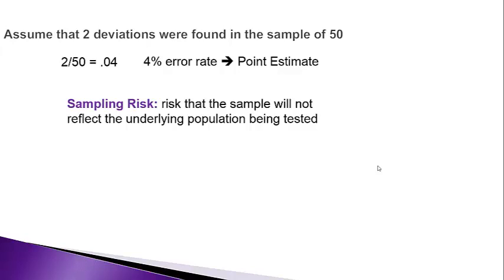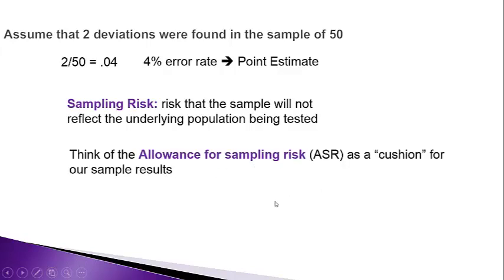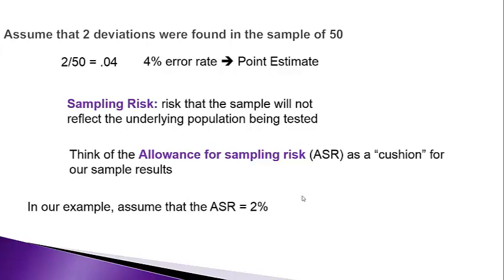As a result, we have something called sampling risk — the risk that our sample does not reflect the underlying population being tested. There will always be risk that our results are not truly reflective of the underlying population. So we give ourselves an allowance for that sampling risk, called the allowance for sampling risk, or ASR. Our estimate is 4%, but since that may not be exactly precise, we give ourselves a cushion. In this example, we'll assume the ASR is 2%.